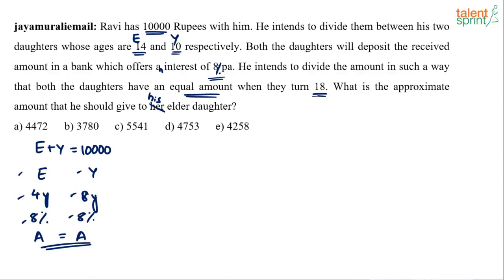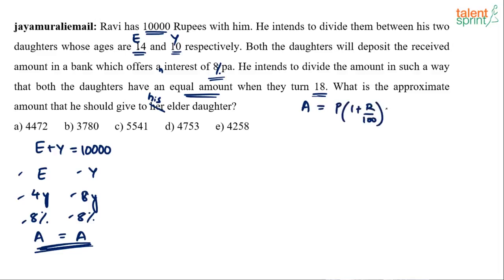Is this a simple interest or compound interest case? Generally if nothing is specified, we take simple interest. But in this case, we go for compound interest because they withdraw the amount only at the end. Whatever interest they earn gets added back to the principal — that's how banks work. The compound interest formula for amount is P into (1 + R/100) to the power T.